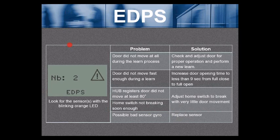EDPS error. Here we're showing two sensors in error. Look for the sensor or sensors with the blinking orange LED. The most common error for the EDPS is the door did not move at all during the learn process. Meaning you started to learn, you saw the blue light, the orange home light was on.